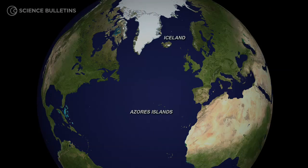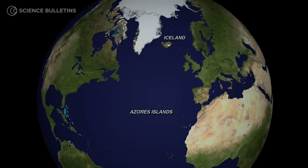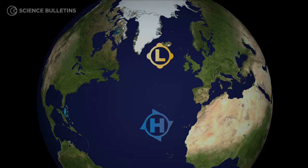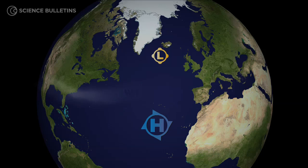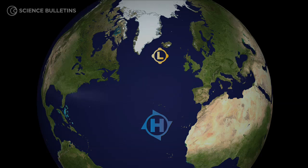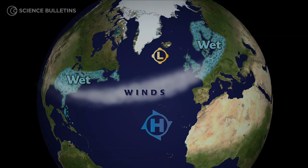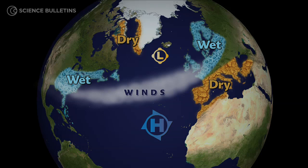The North Atlantic Oscillation is defined by the difference in atmospheric pressure between low pressure over Iceland and high pressure over the Azores Islands. When the pressure difference is greatest, the winds blowing from west to east across the Atlantic tend to be stronger, and this changes the distribution of temperature and precipitation from the United States through Europe and Asia.